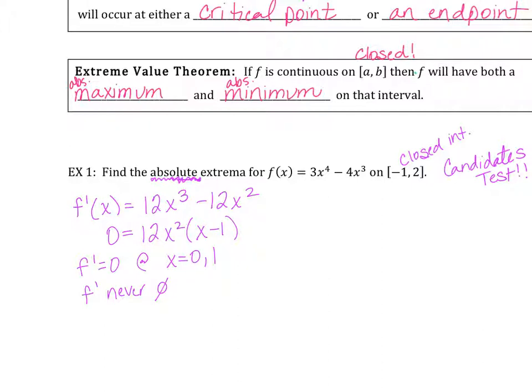This is where the change occurs because I'm not doing a sign analysis. I'm saying this function has absolute extrema because of the extreme value theorem — it's a closed interval, you have a continuous function, it's going to have an absolute max or min. The candidates where those maxes and mins occur are either going to be at zero and one, the critical points, or at the endpoints.